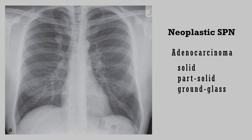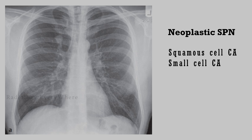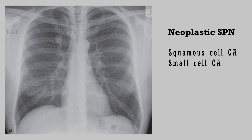and adenocarcinoma is considered the most common primary malignancy of the lung. Squamous cell and small cell carcinomas are usually associated with smoking and tend to occur centrally. Squamous cell carcinoma is prone to cavitation, while small cell carcinoma usually presents as a perihilar mass with associated lymphadenopathy.